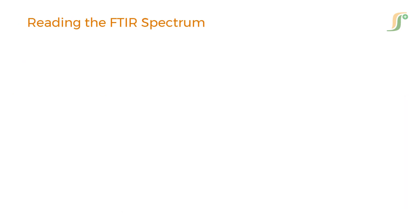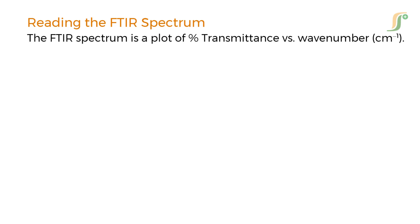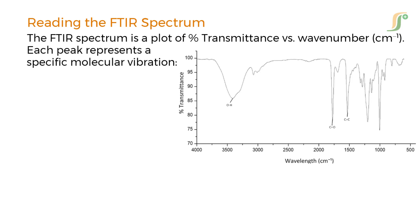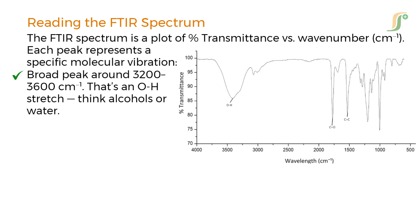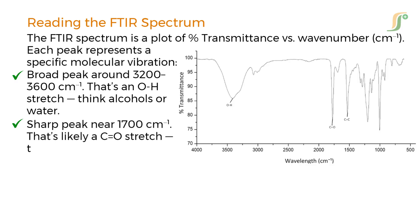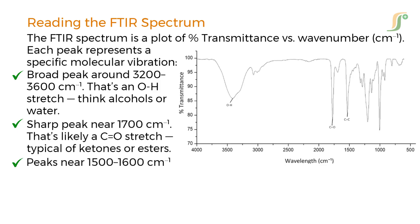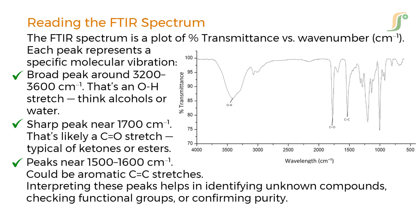Reading the FTIR spectrum: the FTIR spectrum is a plot of transmittance versus wavenumber. Each peak represents a specific molecular vibration. A broad peak around 3200 to 3600 is an O-H stretch — think alcohols or water. A sharp peak near 1700 is likely a C=O stretch, typical of ketones or esters. Peaks near 1500 to 1600 could be aromatic C=C stretches. Interpreting these peaks helps in identifying unknown compounds, checking functional groups, or confirming purity.